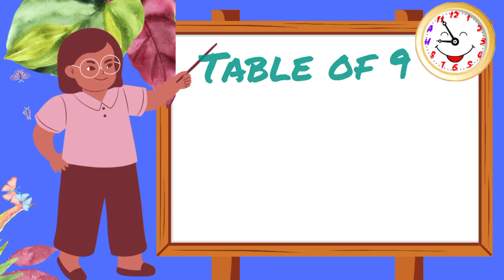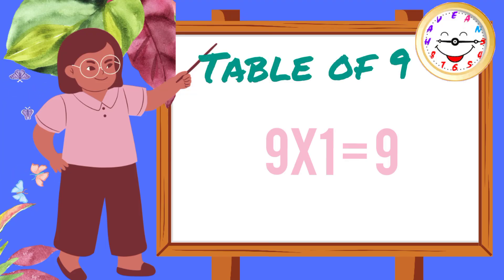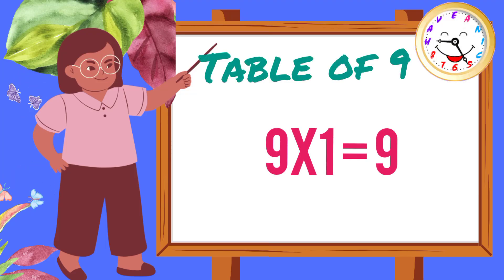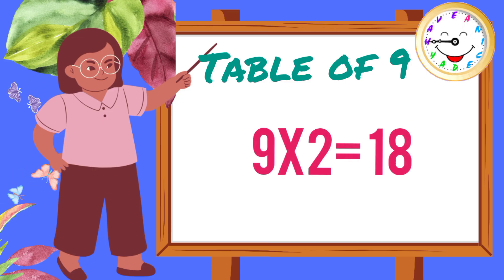Let's learn table of nine. Nine ones are nine. Nine twos are eighteen.